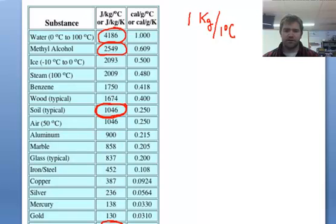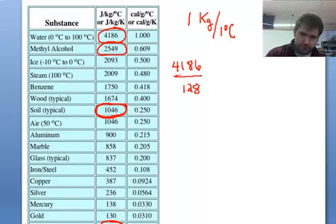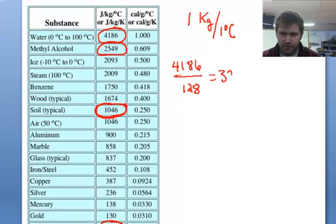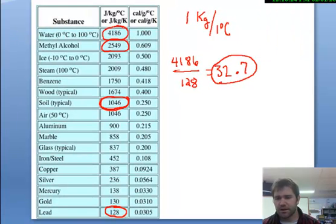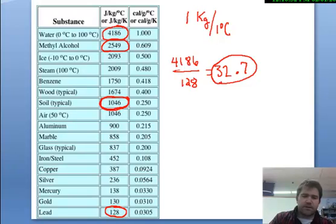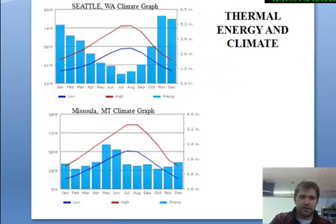It only takes 128 joules of energy to heat a kilogram of lead by one degree Celsius. If we compare those, 4,186 for water divided by 128 for lead, we find out that water has a specific heat 32.7 times bigger than lead. It takes 32.7 times more energy to heat up water than it does to heat up lead. That's what specific heat means. So, let's apply specific heat to a couple real-world situations like climate.